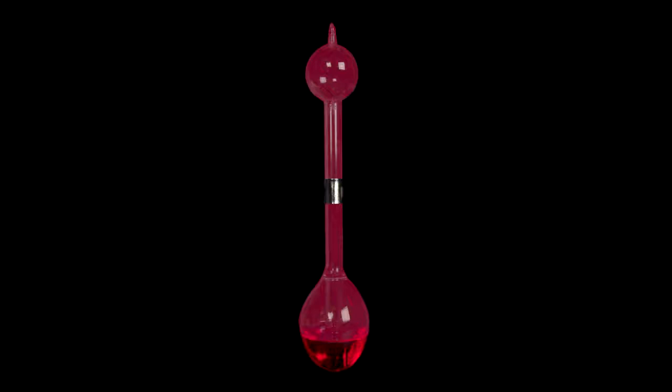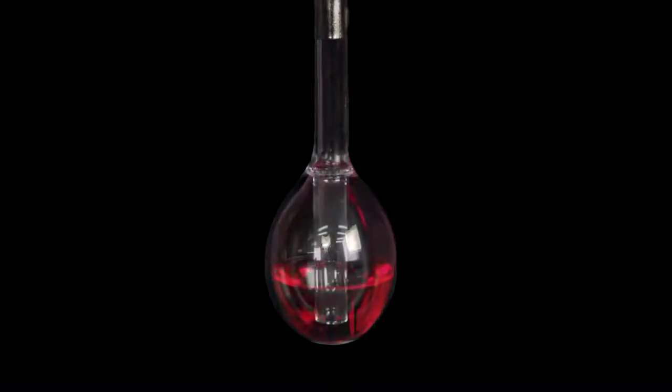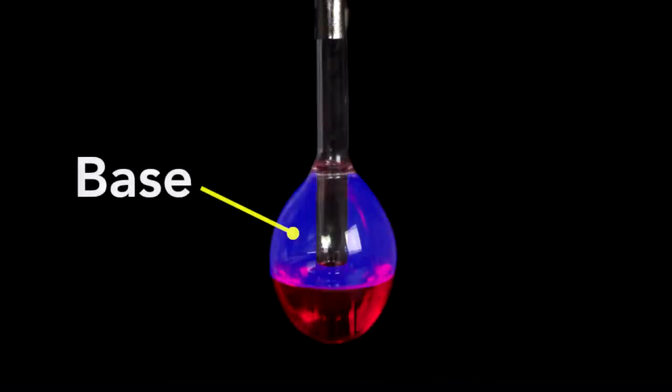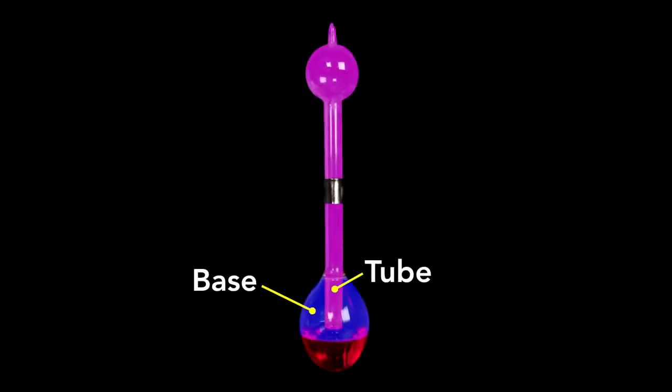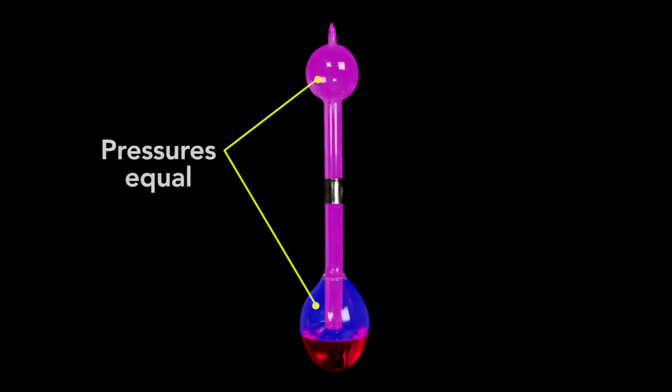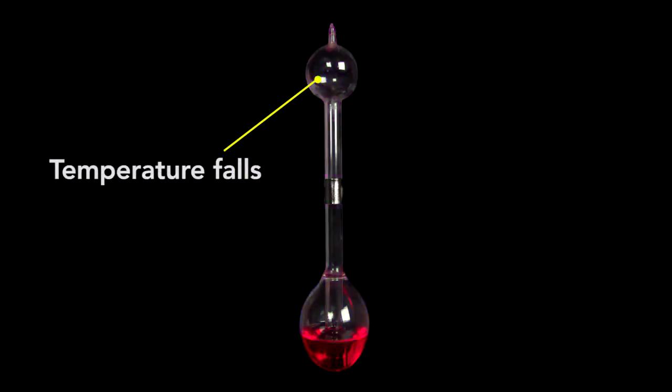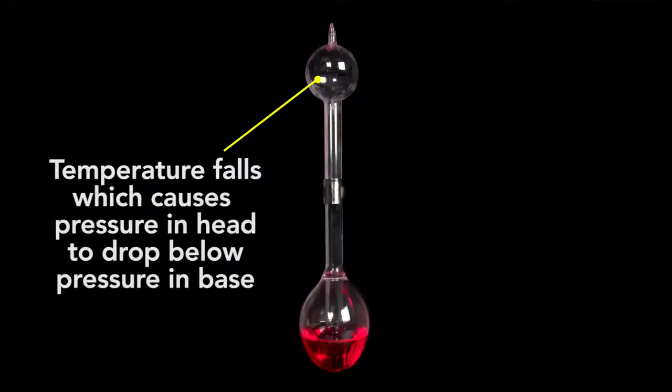The key to the bird's operation is that the vapor in the head and in the base are separated by the liquid in the base. It's hard to see, but a tube extends into the base nearly reaching the bottom. This separates the vapor in the base and the vapor in the tube and of course, the head. So at rest the pressure in these two spaces are equal, but when the bird's beak is wet, the temperature falls, and as I'll explain in a moment, the pressure in the head drops below that in the base and the liquid rises.